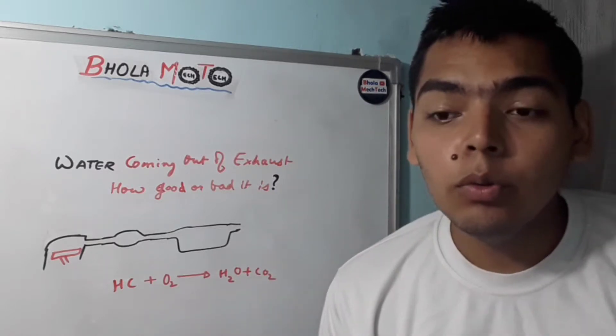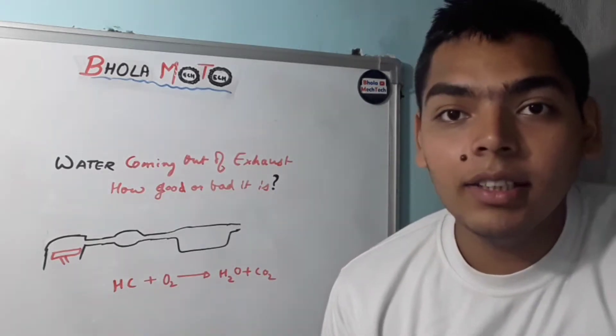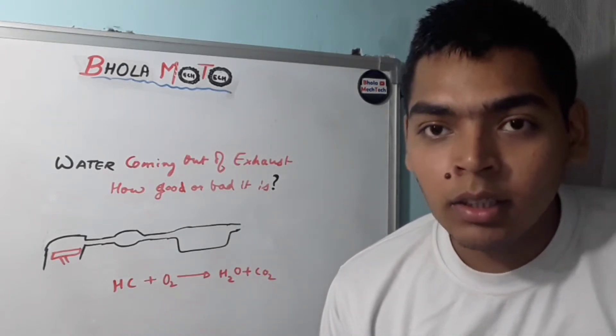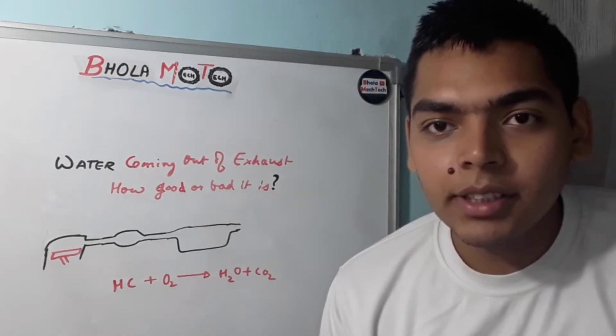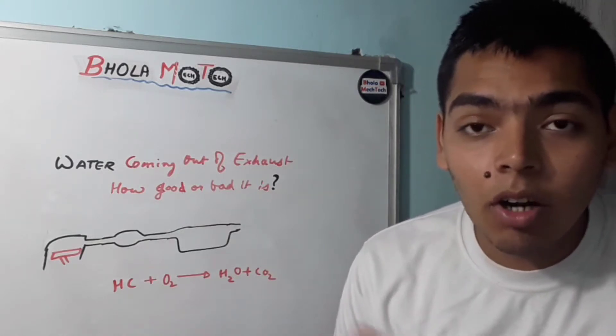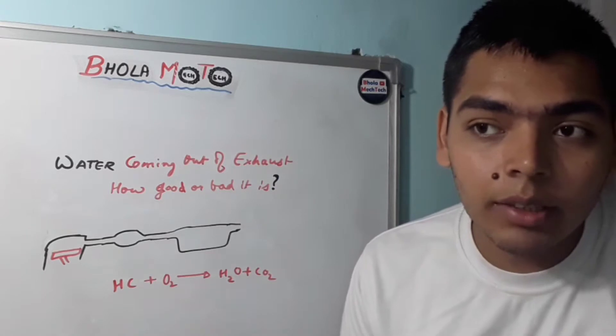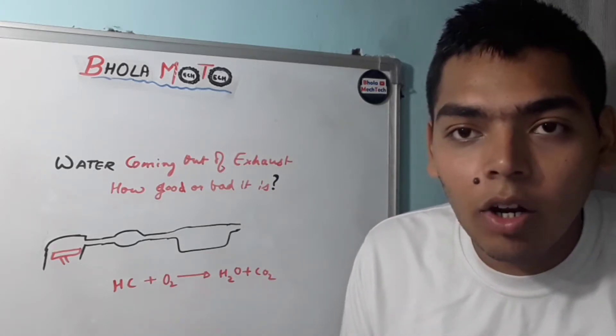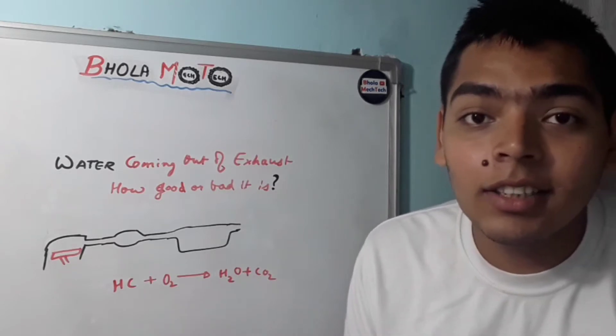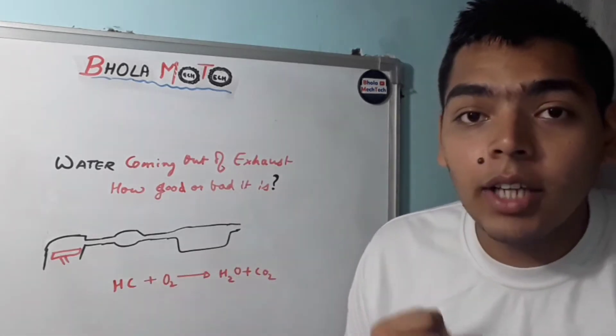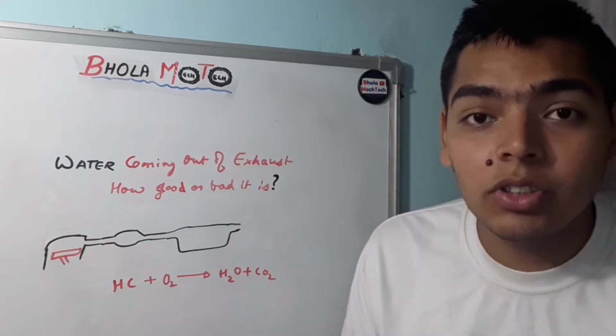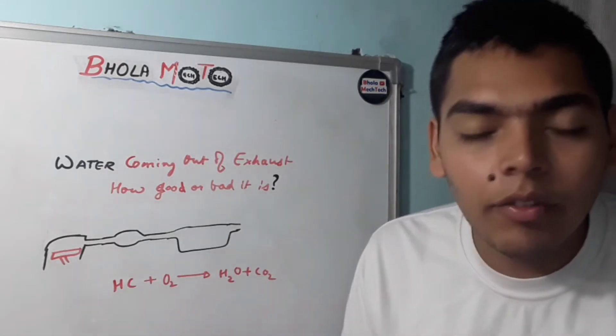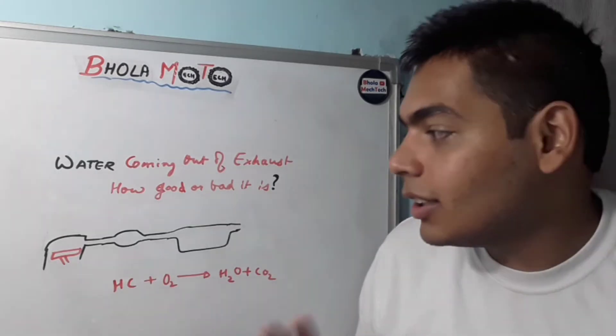But in case of summers, you would have rarely seen this water coming out of the exhaust gases. That is because in summer season, while coming out, the temperature outside is already too high, so there are very less chances of water getting condensed in the exhaust path. That's why in summer season you might have seen it very rarely, but it is much more often in rainy season especially, and in winter seasons.